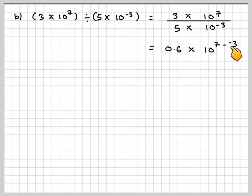For the second example, we've got 3 times 10 to the 7 divided by 5 times 10 to the minus 3. Remember, do this without a calculator. Writing it as a fraction, it's 3 times 10 to the 7 over 5 times 10 to the minus 3. You might know that 3 over 5 is 0.6, times 10 to the 7 minus minus 3. Be very careful with your minus signs, which gives you 0.6 times 10 to the 7 plus 3, which is 0.6 times 10 to the 10.